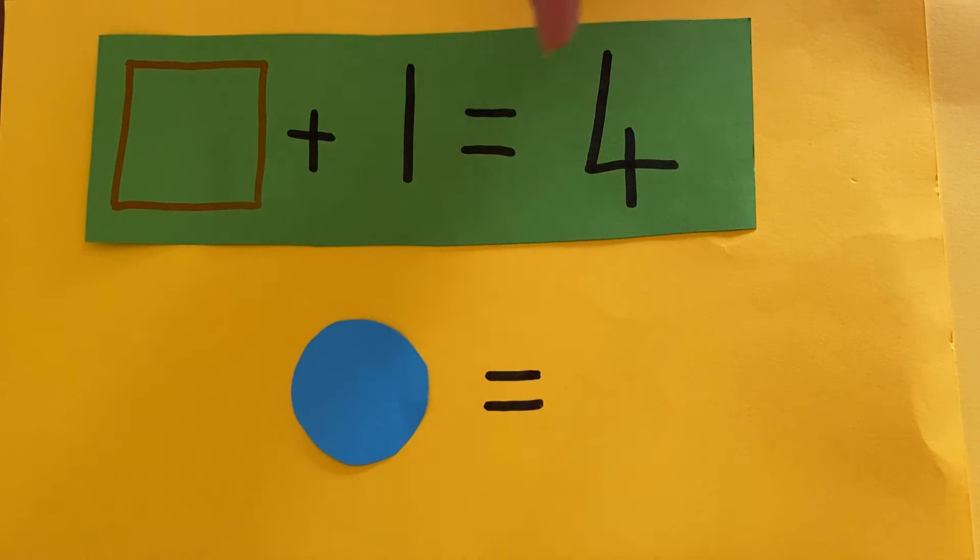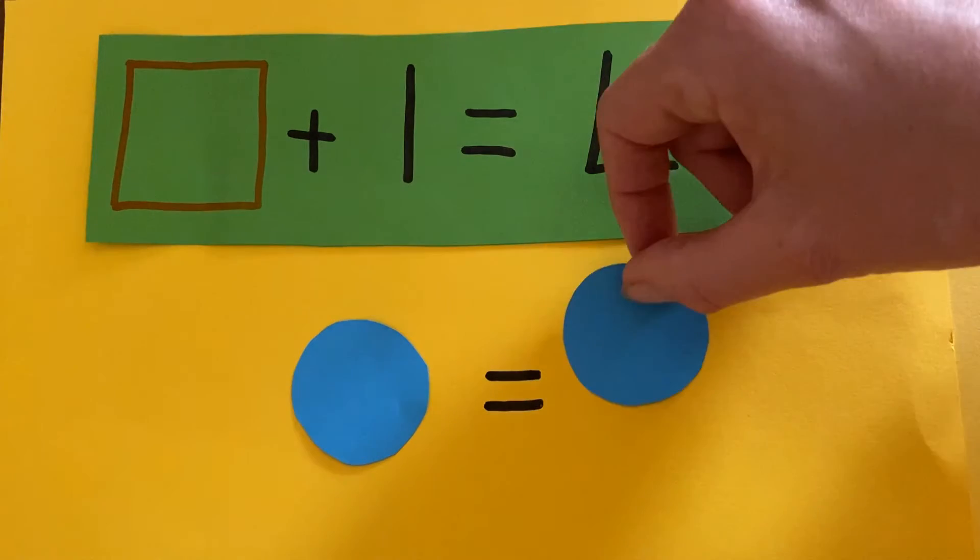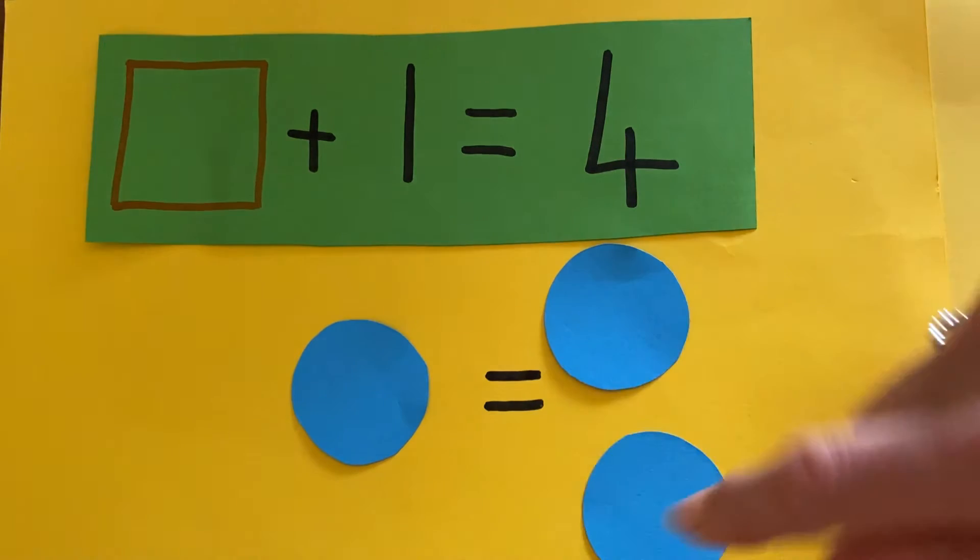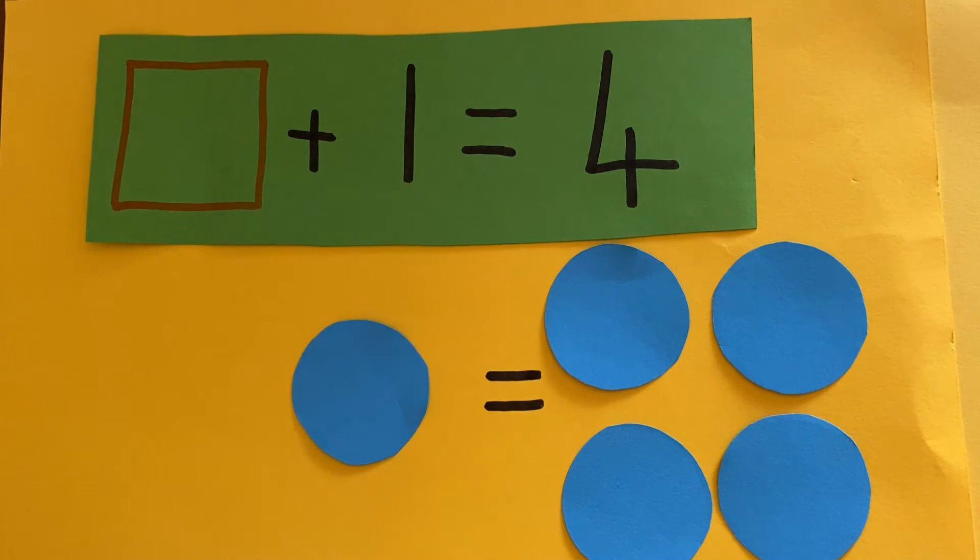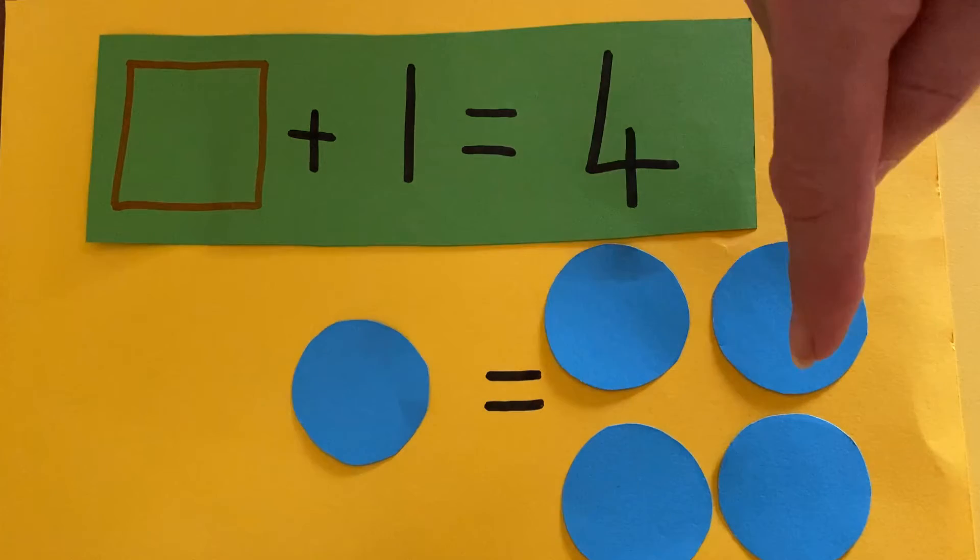It's the same as four. I'm going to put four this side. Two, three, four. That's not the same, is it?